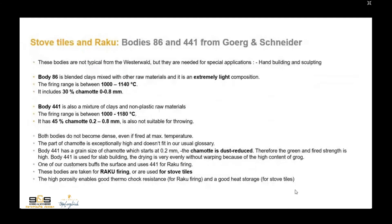For stove tiles and raku, you can use bodies 86 and 441. These bodies are not typical for the Westerwald but are needed for special applications — hand building and sculpting. Body 86 is blended clays mixed with other raw materials and is an extremely light body composition. The firing range is between 1000 and 1140, and it includes 30% chamotte 0 to 0.8 mm. Body 441 is also a mixture of clays and non-plastic raw materials, with a firing range between 1000 and 1180, and 45% chamotte 0.2 to 0.8 mm. It is not suitable for throwing because of the chamotte grain size.